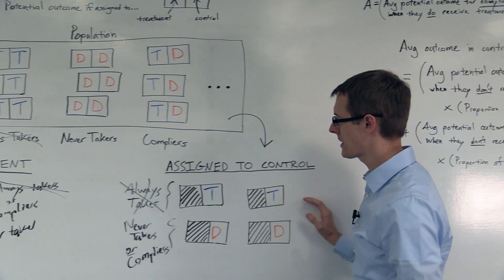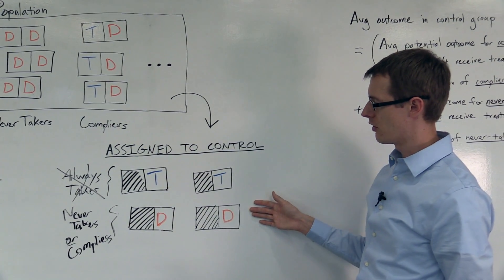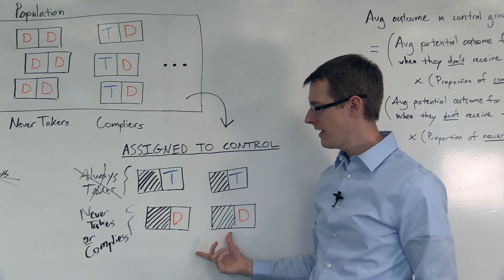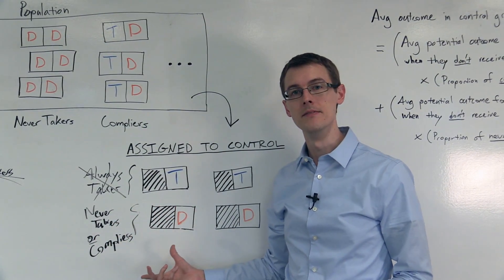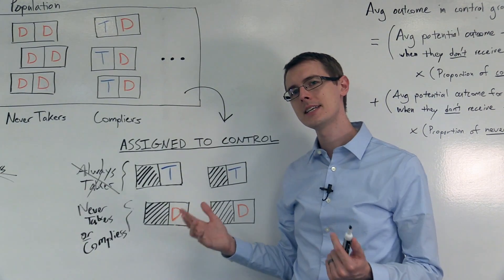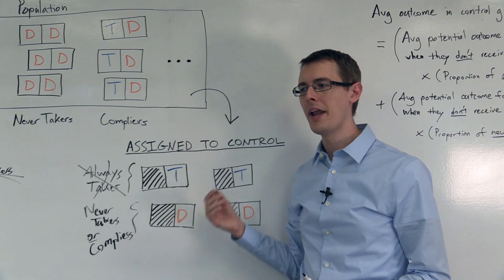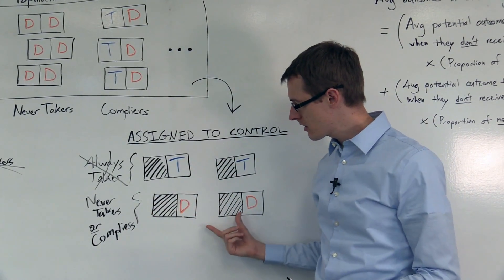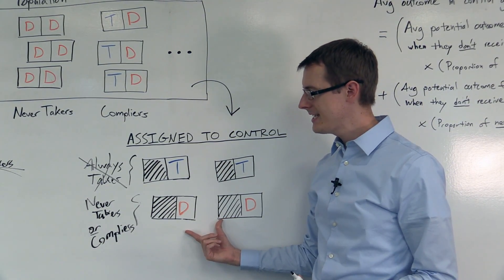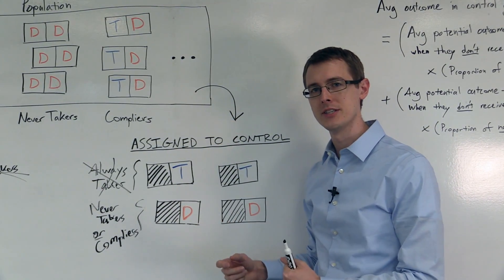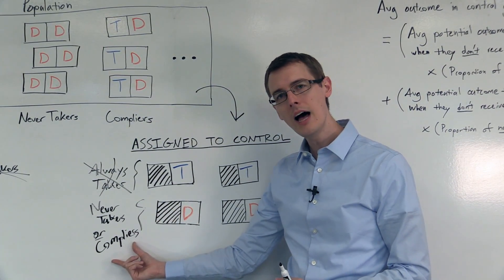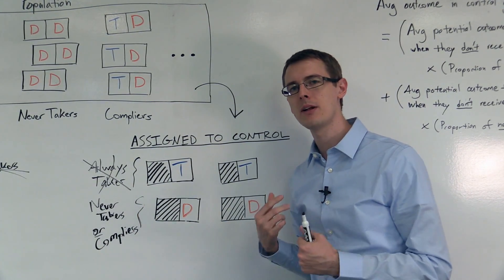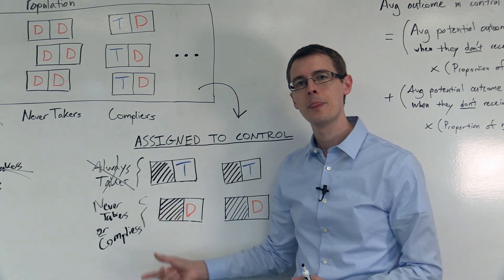The next part is a little more complicated. If we went over here to the control group and looked at the average outcome — the average cholesterol for these people — if there were no never-takers, we'd be done. That would be exactly what happens in a randomized experiment with perfect compliance. The problem is the average cholesterol for this group is a mixture of two averages: the outcomes for compliers and the outcomes for the never-takers. But we only care about the compliers, so these never-takers are a problem.